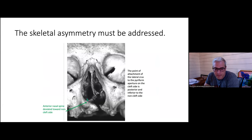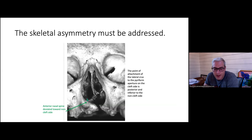It also doesn't address the skeletal asymmetry in a real way. It's really addressing the medial and lateral malpositioning of the alar base, but not the anterior-posterior malposition of the alar base. I found this image of a 3D printed facial skeleton of a patient with an unrepaired cleft, and it's very informative of how three-dimensional the asymmetry is around the piriform aperture. While we are very aware of how the anterior structures are affected, including the anterior nasal spine and the septum, the piriform aperture is very asymmetric. If you don't address this, you're going to have a suboptimal result.